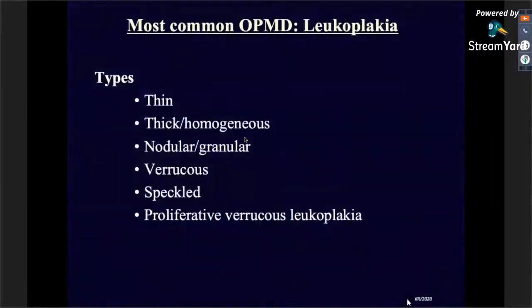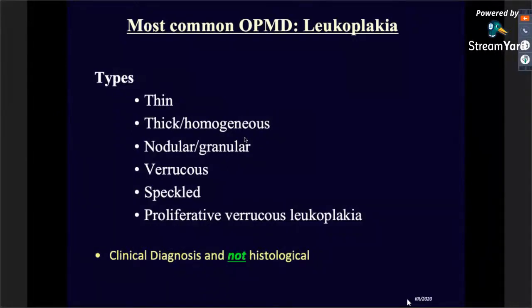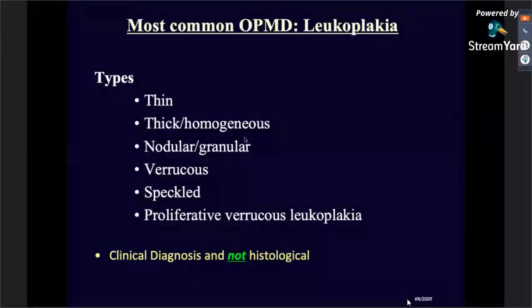A few clinical aspects of OPMD: you get a wide variety of leukoplakias, which are the most common. You get thin, thick or homogeneous, nodular or granular, verrucous, speckled, and proliferative verrucous leukoplakias. There are also lesions like verrucous hyperplasia and oral submucous fibrosis. One important thing to keep in mind: leukoplakia is a clinical diagnosis, not a histopathological diagnosis. We still sometimes see pathology reports where the diagnostic line states 'histopathology is consistent with leukoplakia,' which is not correct — leukoplakia is a clinical diagnosis of exclusion.